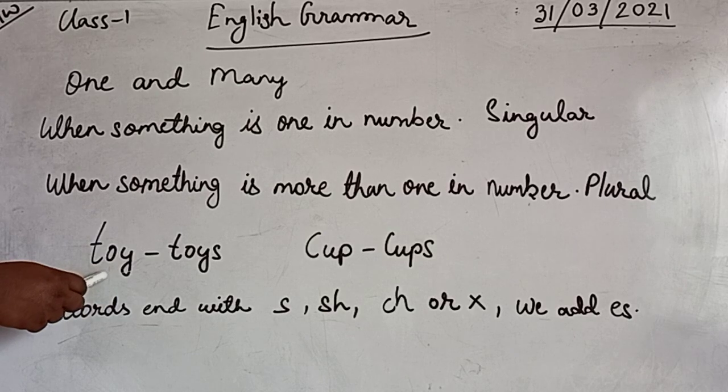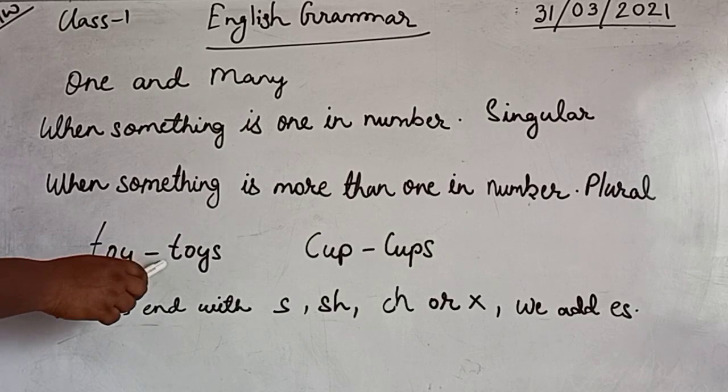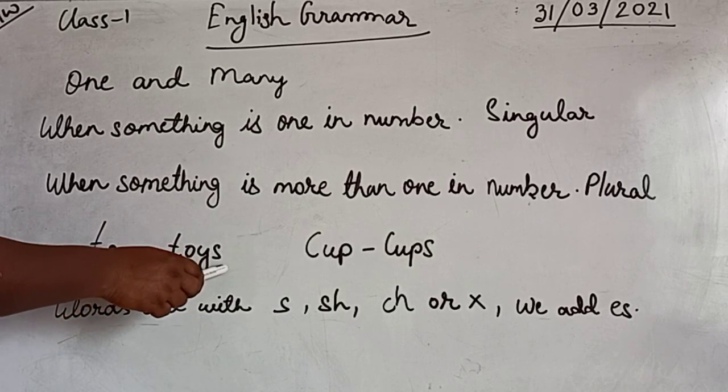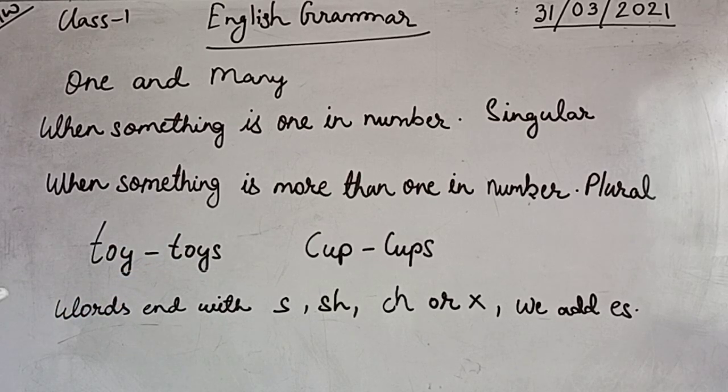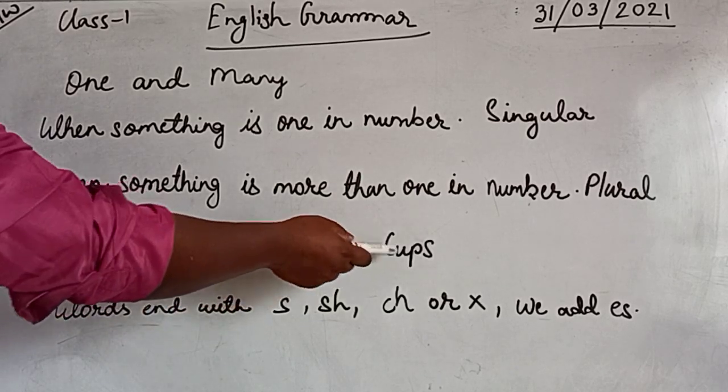For example, toy - this is one in number, only one toy. Here it's written as toys, we just add 's' to make it plural. Like curve and curves: curve is singular, and in curves we add 's' to make it plural.